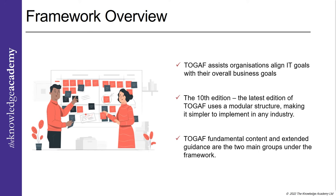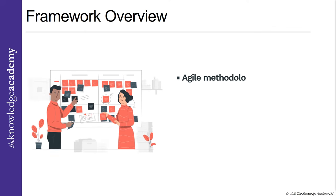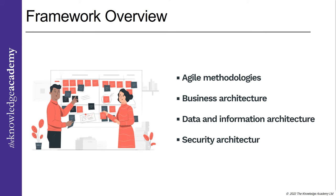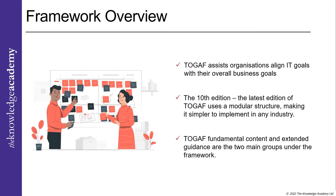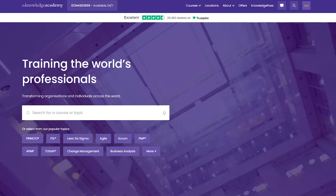The TOGAF fundamental content and extended guidance are the two main parts under the framework. The fundamental content comprises all the TOGAF requirements and recommended practices that lay the framework's structure. Agile methodologies, business architecture, data and information architecture, and security architecture are a few specific subjects covered in the extended guidance section. The fundamental content provides an essential starting point for anyone wishing to implement the framework, while the comprehensive guidance section is anticipated to change over time as best practices evolve.